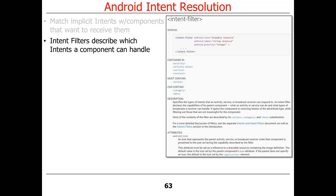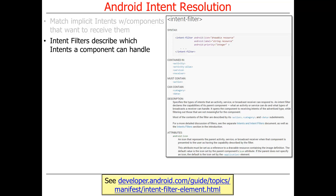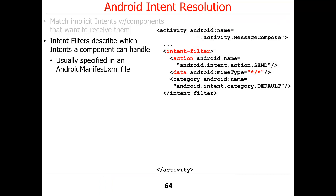Intent filters describe which intents a component can handle. These are used by the system to figure out who is going to handle intents generated by another application or activity. They are usually specified in an Android manifest file. Manifest files are metadata — data about data — and they describe the components provided by an application. Every application in Android has a manifest file explaining the components it exports, permissions it needs, and SDK versions it uses.